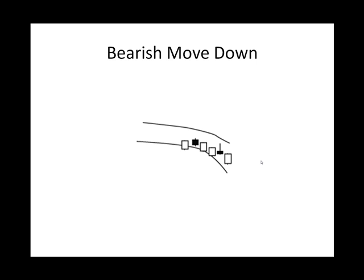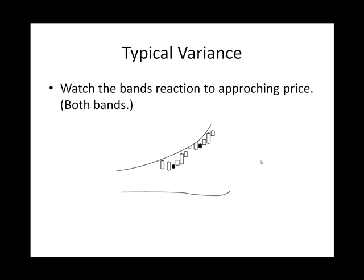Same with the bearish move down. We have price along the lower band. In the beginning, we have constricting volatility. As price moves, we do see a little bit of expansion, but the upper band is following the lower band, which tells us that volatility is not expanding like we'd like to see it. Maybe some of you would skip this move, but maybe not. The move is probably still going to take place, but it's not going to be as big. You might consider a one or two candlestick time frame in a move like this.